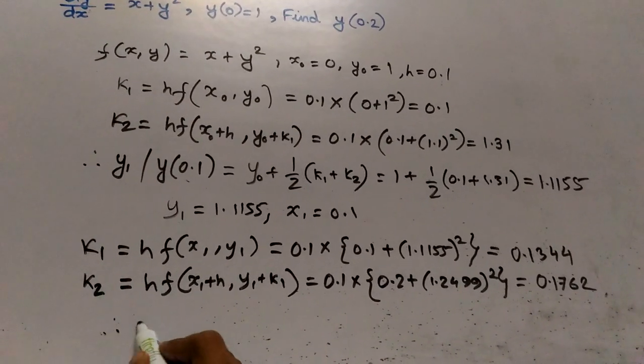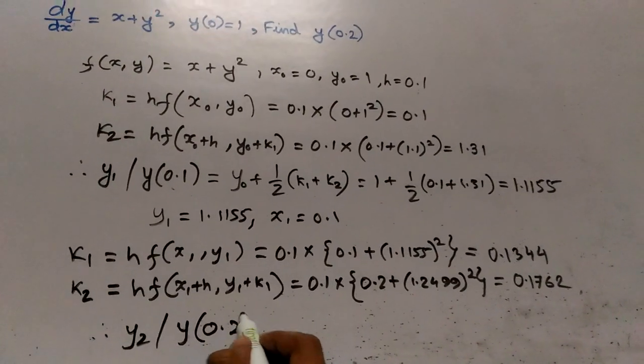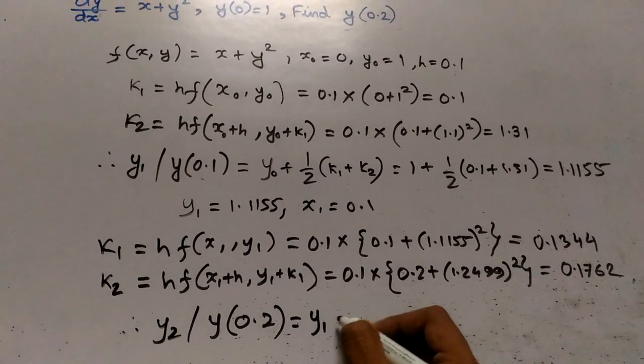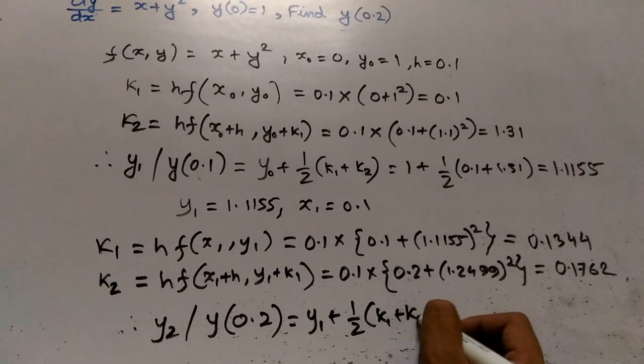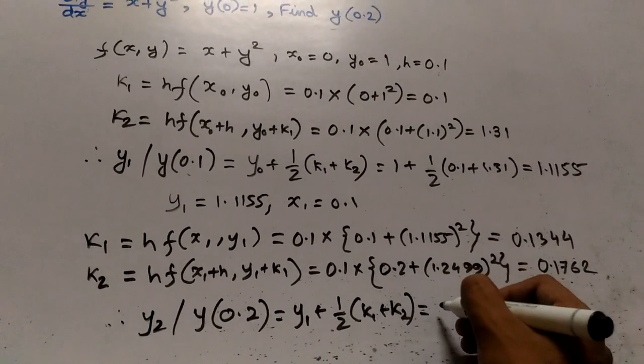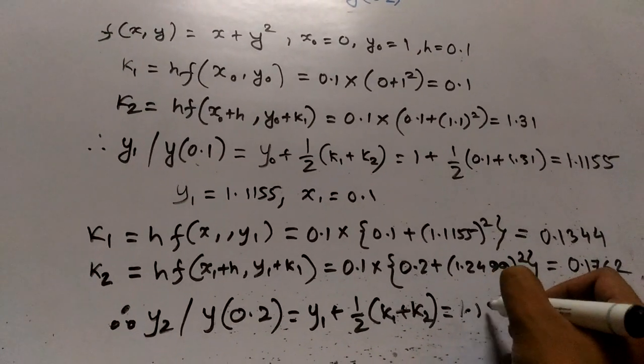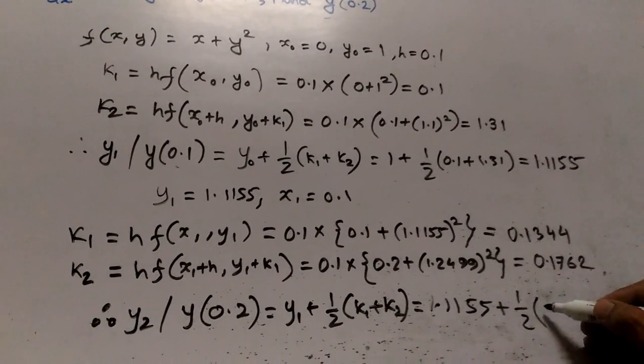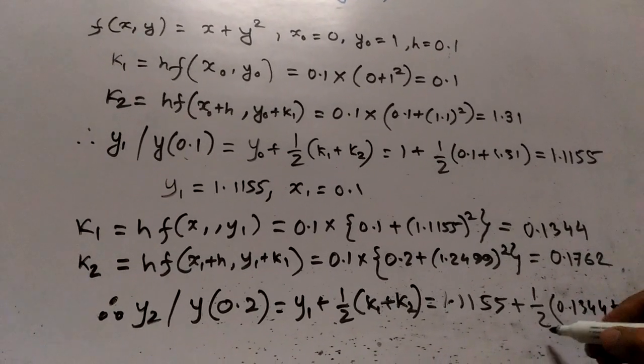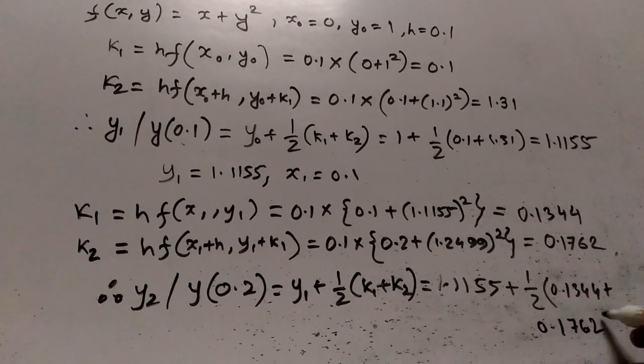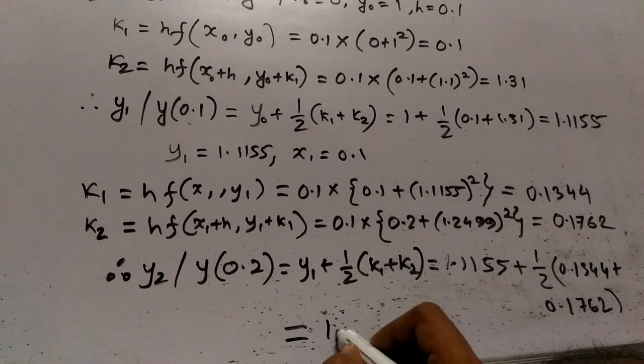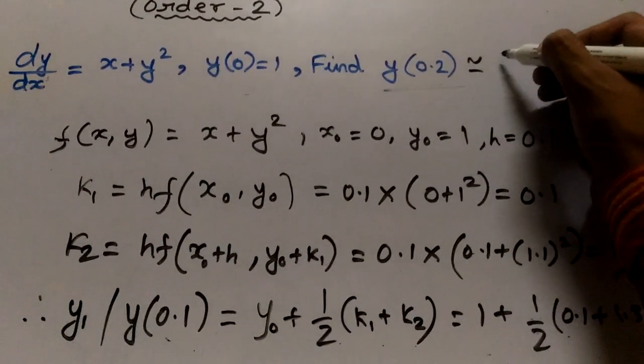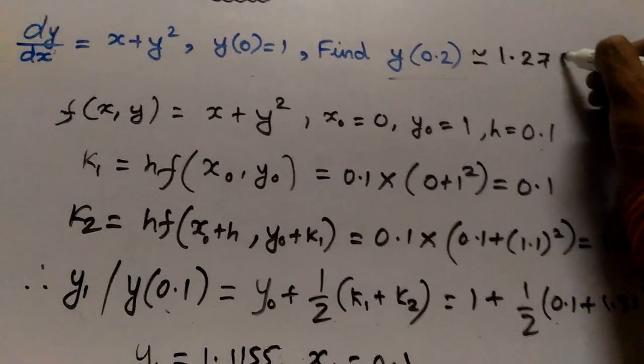So now we can easily calculate the value of y2 or y(0.2), which is our prime requirement. y(0.2) equals y1 plus half K1 plus K2, that equals 1.1155 plus half into 0.1344 plus 0.1762, that is equal to 1.2708. So our y2 is approximately 1.2708.